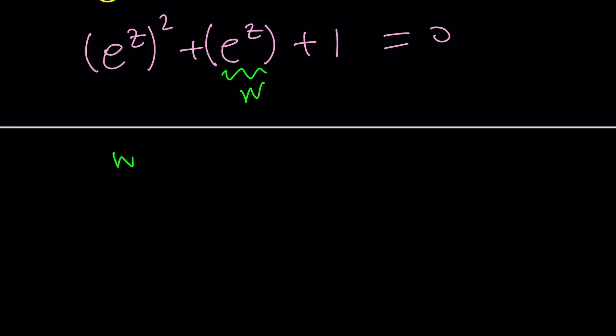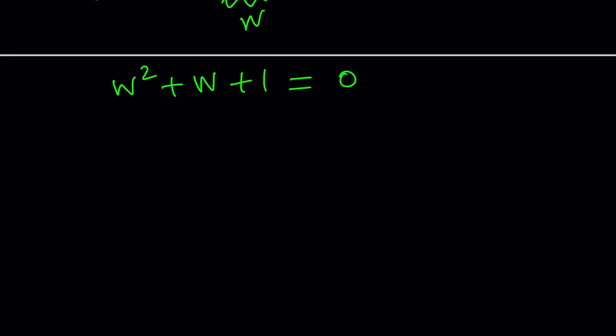So this becomes w squared plus w plus 1 equals 0. Now there's a couple different ways to solve this problem. I'm going to show you both. And one of the methods is just using the quadratic formula, which kind of makes sense. So the quadratic formula tells us that w is negative b plus minus the square root of b squared, which is 1, minus 4ac, which is 4, divided by 2a, which is 2. That's going to be negative 1 plus minus the square root of negative 3, divided by 2.